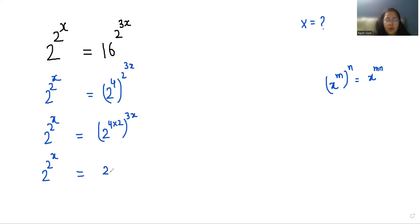2^4, we can write it as (2^2 × 2)^(3x). Now 2^(2^x) equals—again I'm going to use this rule and we can write